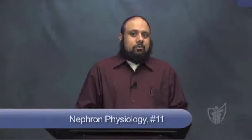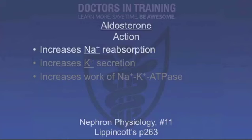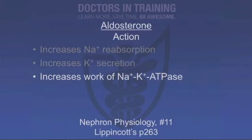In the collecting tubule, specific importance is placed on aldosterone and antidiuretic hormone. Both agents act specifically at this site. Aldosterone works via receptors in the principal cell to increase sodium reabsorption and potassium secretion. It also increases the work of the sodium-potassium ATPase pumps to pump sodium into the interstitium and potassium back into the cell. This is going to be particularly important later on in the lecture.